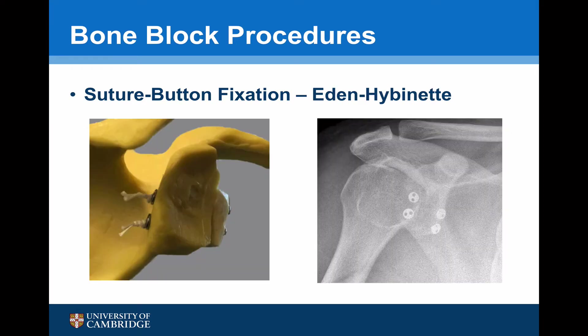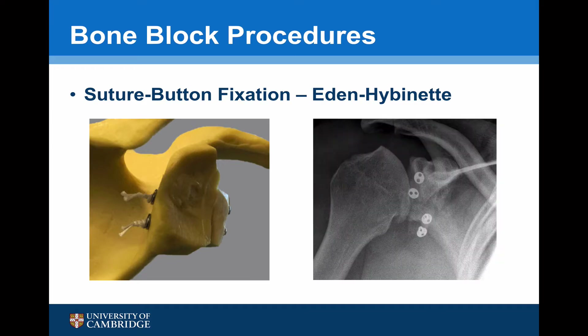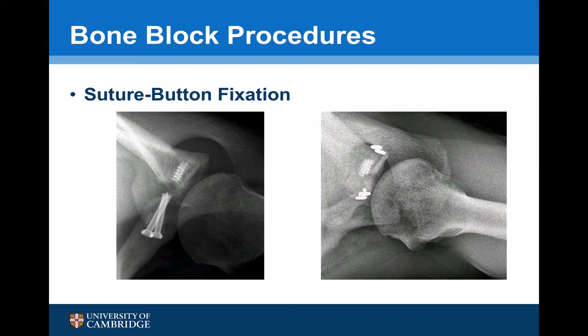For an Eden-Hybinette procedure, an all-arthroscopic technique can be used through the rotator interval. This has the advantage of not having to split the subscapularis and not dissecting through the anterior compartment. This post-operative X-ray demonstrates an arthroscopic Eden-Hybinette procedure in a patient who already had pre-existing osteoarthritis — he may well require total joint replacement in the future, but there is no metal work in the glenoid to contend with. These X-rays also demonstrate a revision Eden-Hybinette procedure for a failed coracoid transfer in which the screws had snapped and the shafts had been retained within the glenoid, and the suture buttons were able to bypass the retained metal work.